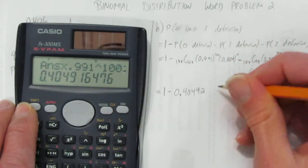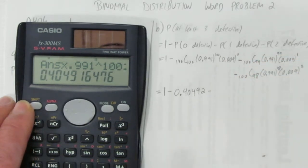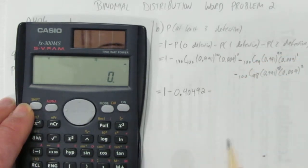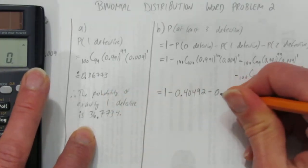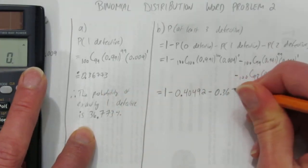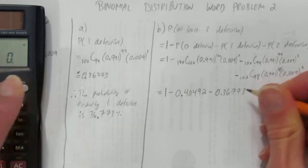Minus 100 choose 99. Well, we already know this one. I'm not going to recalculate it. We did it right here. It's 0.36773. And now the last one.